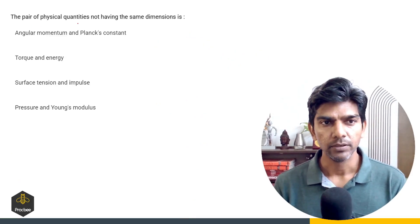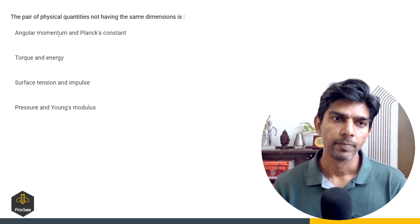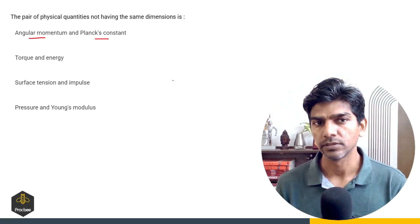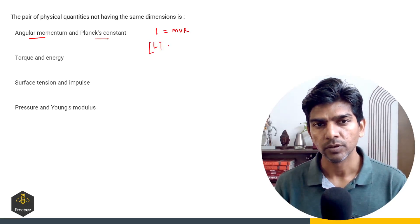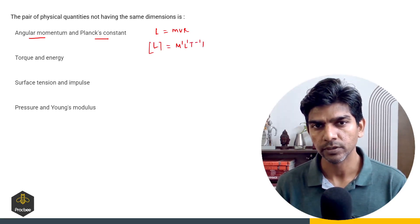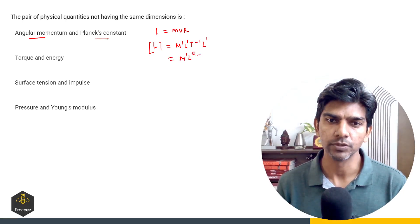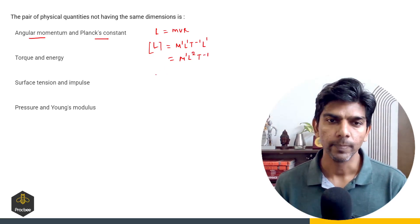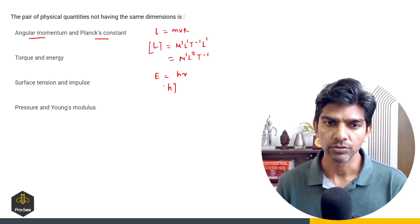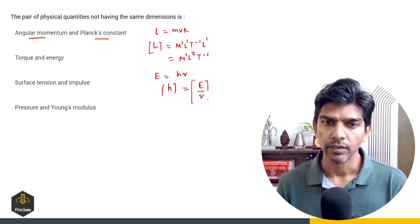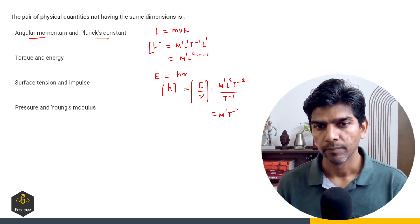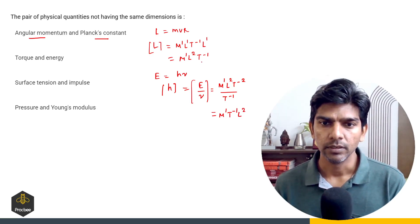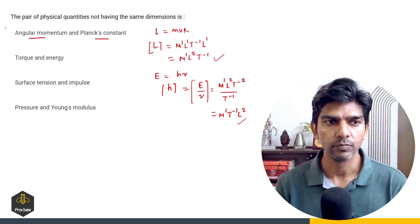The next question asks for the pair of physical quantities not having the same dimension. We have angular momentum and Planck's constant. For angular momentum, we use L equals M·v·r from rotation. So the dimension is M raised to power 1, L raised to power 2, T raised to power minus 1. For Planck's constant, using energy of photon E equals h·ν, dimension of h equals energy upon frequency, giving M raised to power 1, L raised to power 2, T raised to power minus 1. Their dimensions are the same, so option 1 is incorrect.